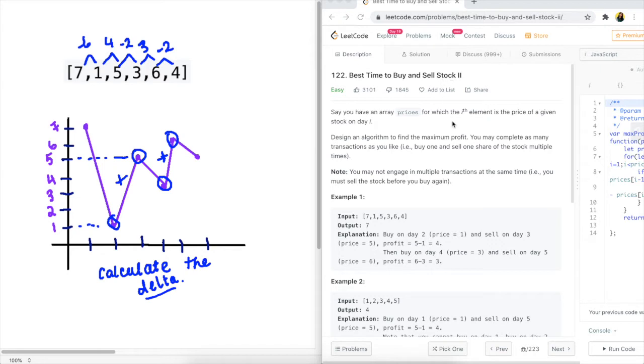In this question we're given an input array. If you haven't done the first version of this question, I will link it in this video somewhere so you can have a look at that too. The difference between that question and this question is that we are able to perform multiple transactions at the same time. We can do multiple stock buy and sells, but we can't buy a stock if we haven't sold the previous stock already.